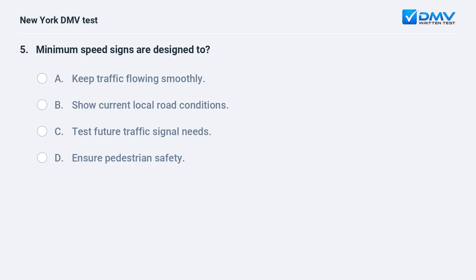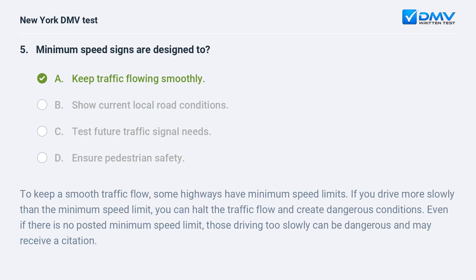Minimum speed signs are designed to: A. Keep traffic flowing smoothly. B. Show current local road conditions. C. Test future traffic signal needs. D. Ensure pedestrian safety. The answer is A: Keep traffic flowing smoothly. To keep a smooth traffic flow, some highways have minimum speed limits. If you drive more slowly than the minimum speed limit, you can halt the traffic flow and create dangerous conditions. Even if there is no posted minimum speed limit, driving too slowly can be dangerous and may result in a citation.